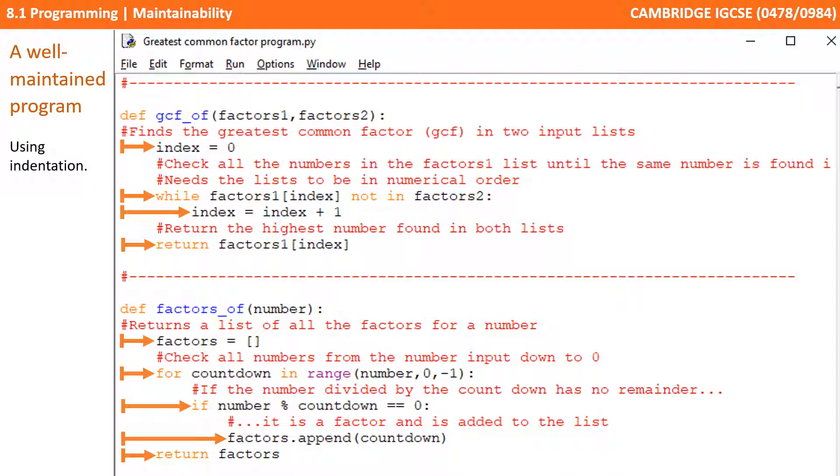And we're using sensible indentation. Now, Python forces you to do this. If you didn't, the program wouldn't compile. And many other IDEs out there will do automatic indentation for you when you, for example, use an iteration or a for loop. But it's not always the case and is sometimes left up to the programmer.